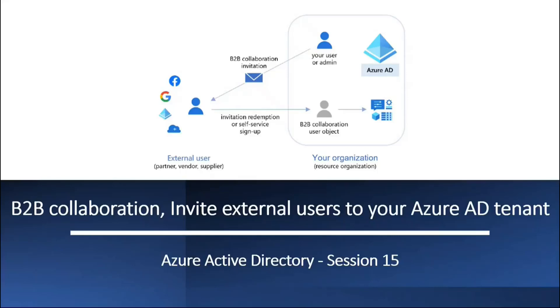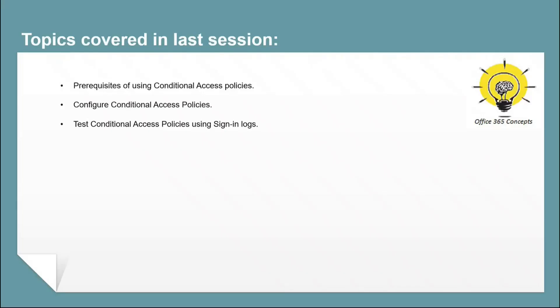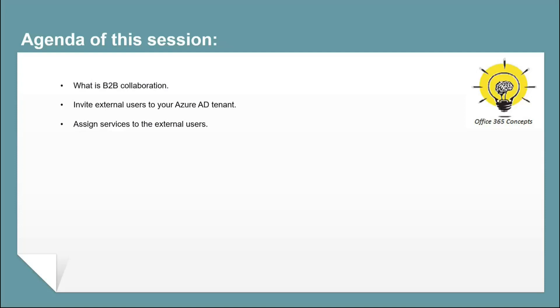Hi guys, I hope you all are doing well and welcome to the next video of this entire series of Azure Active Directory. In the last video, we configured conditional access policies in Azure Active Directory. In this particular video, we will be talking about B2B collaboration — how it works, how to invite external users to your Azure AD tenant, and how to assign services to the external users.